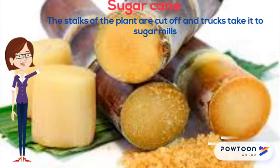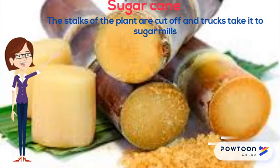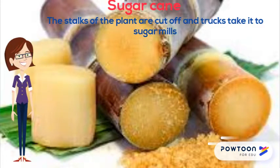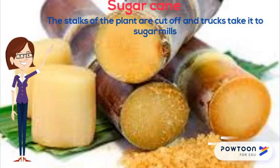Sugarcane is used to make sugar. The stalks of the plant are cut off and trucks take them to sugar mills, where the canes are crushed and the syrup inside is made into sugar.